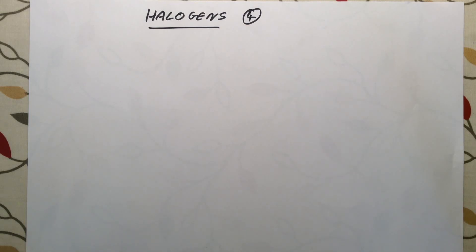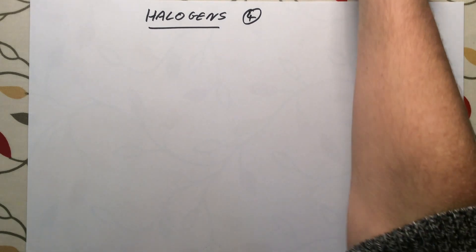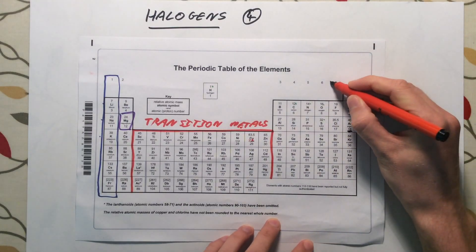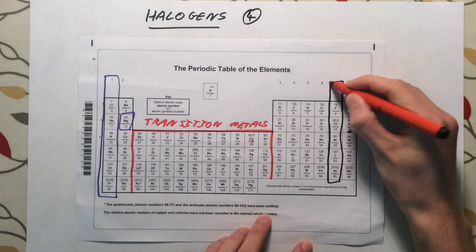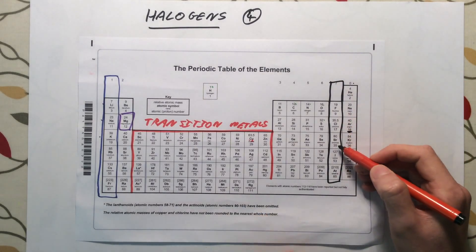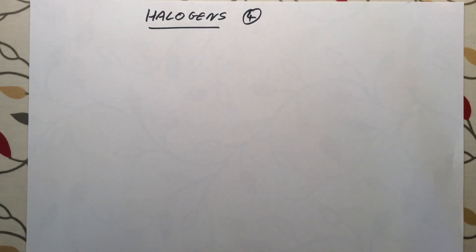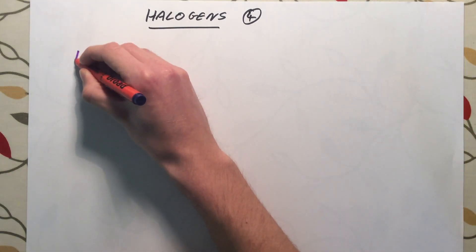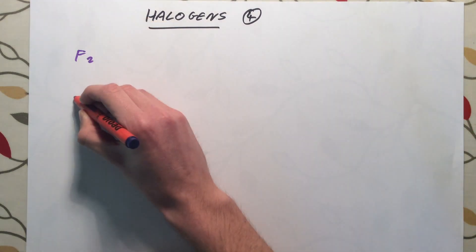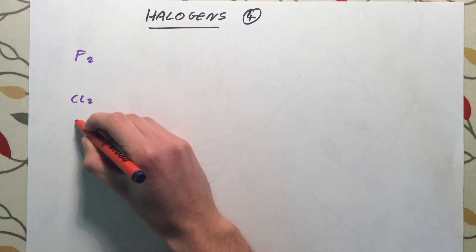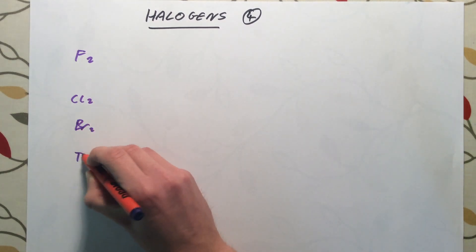This is the final video for Edexcel additional chemistry topic 4, and in this video we're going to be looking at the final group of the periodic table we need to know about, which is the halogens. The halogens are group 7 of the periodic table, and they include fluorine, chlorine, bromine, iodine, and astatine. They are very reactive and always form diatomic molecules — F2, Cl2, Br2, and I2.